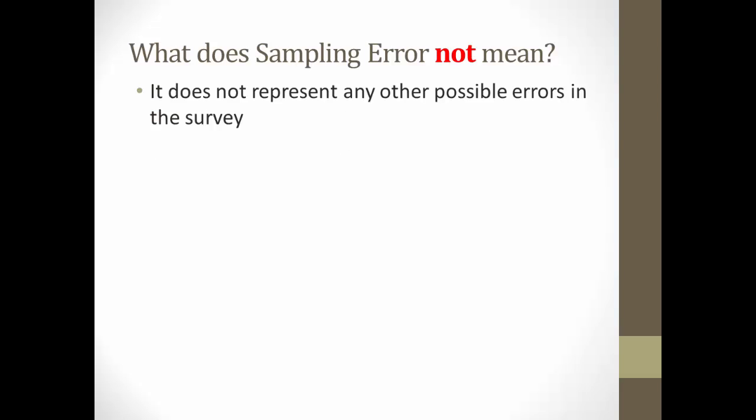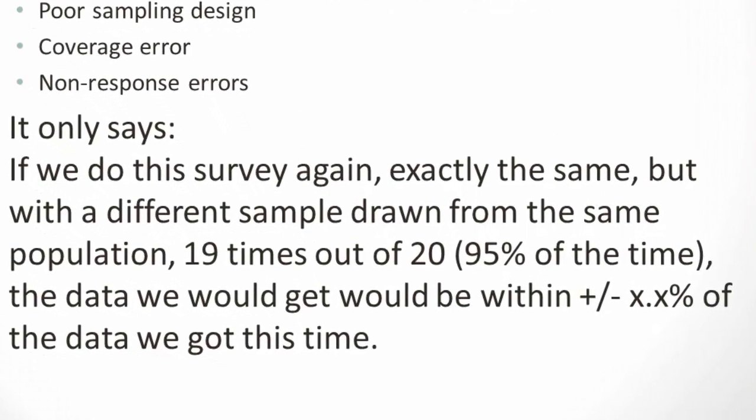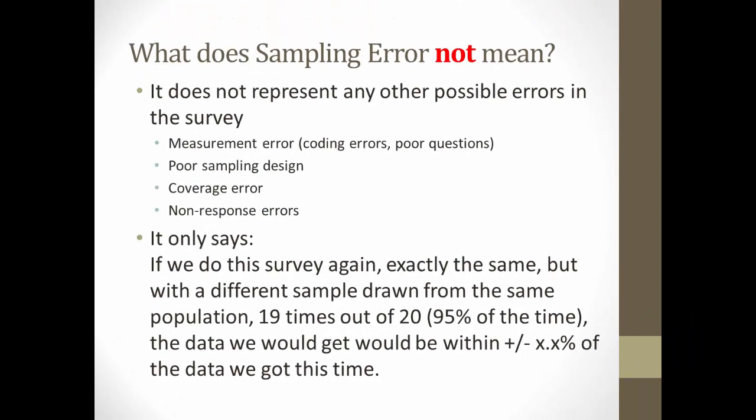Don't confuse sampling error with other possible errors, such as measurement error, poor sampling design, coverage error, and non-response error. Sampling error only says, if we were to do this survey again, exactly the same, but with a different sample drawn from the same population, 19 times out of 20, or 95% of the time, the data we would get would be within plus or minus a certain percent of the data that we got this time.